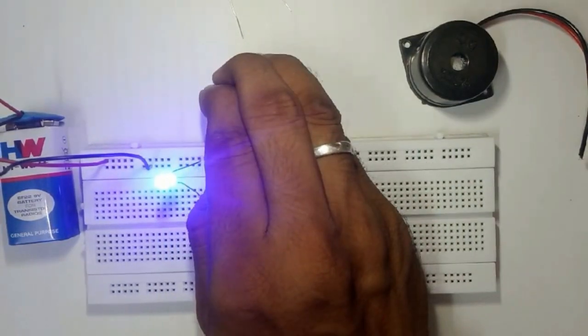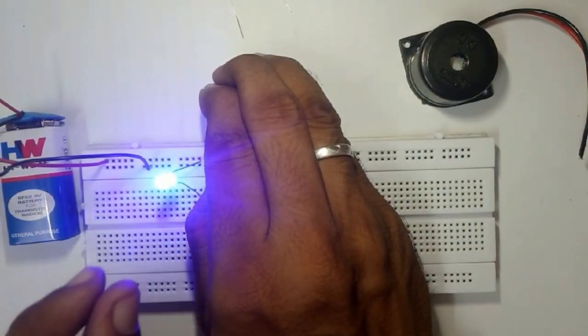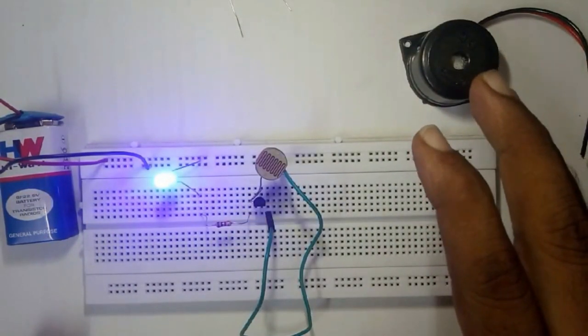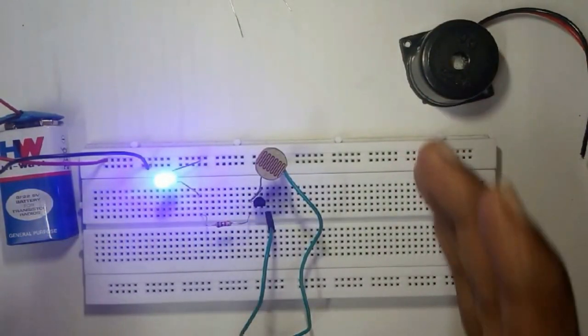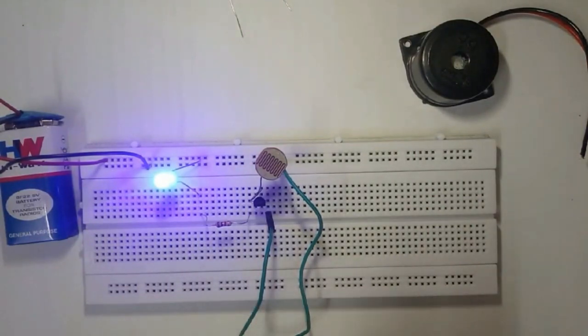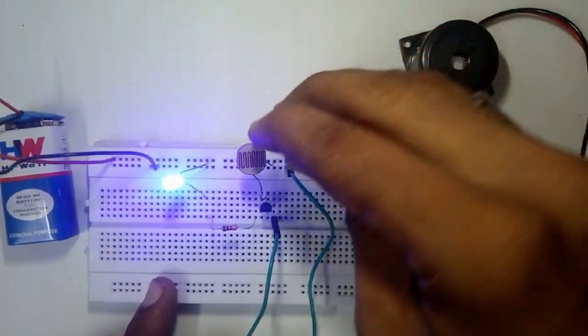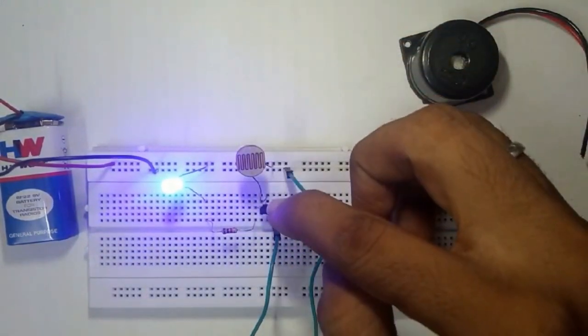So I'm going to close it like this. I could see the LED has gone dimmer, and when I remove my hand it's glowing brighter. But that's not how it should work, right? It should switch off. So why is it happening? It's because the LDR is actually passing a minimum voltage here which is enough for the transistor to work.